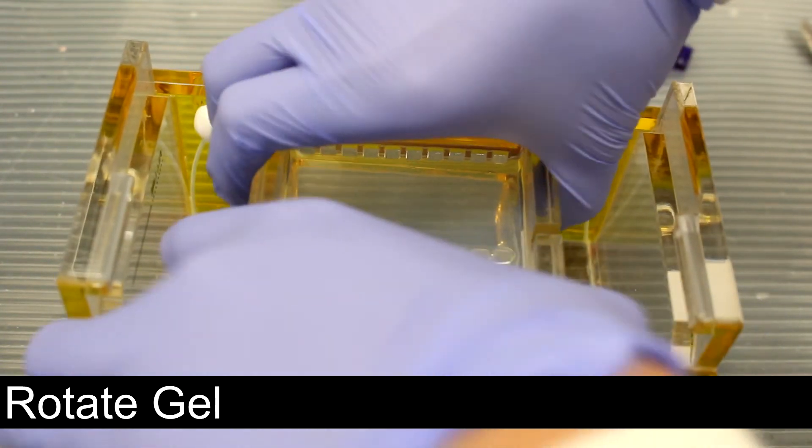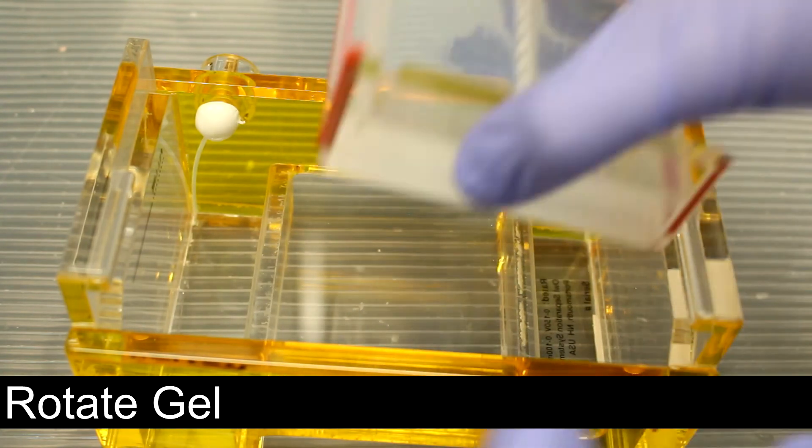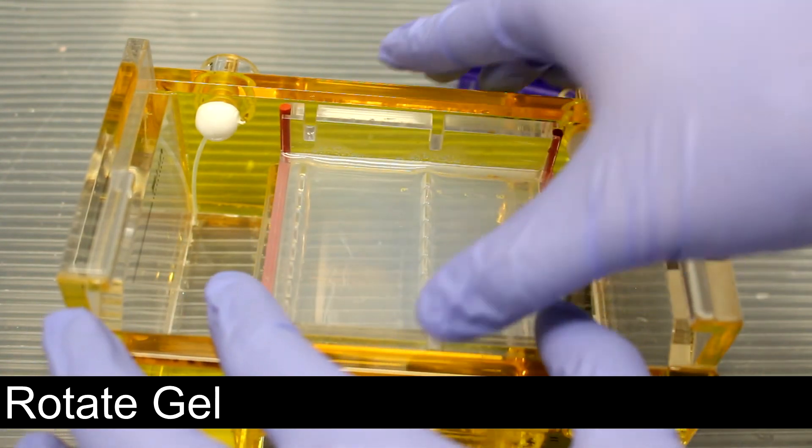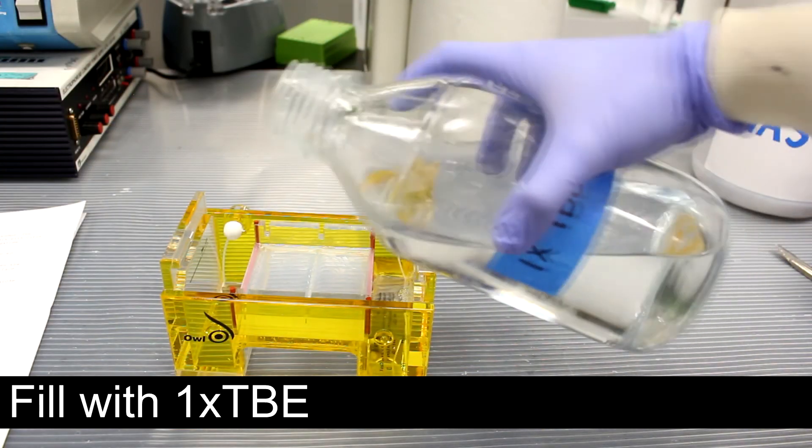The gel is rotated to where the wells are on the side with the negative electrode. 1x TBE is poured into the gel rig until it passes the level of the agarose gel.